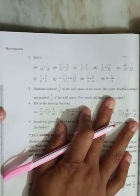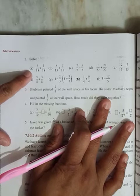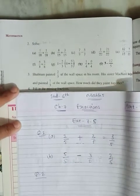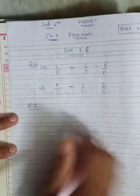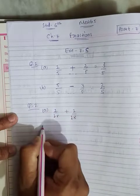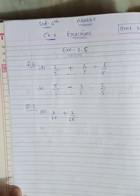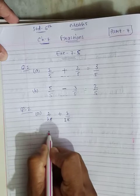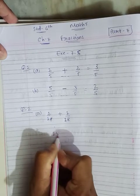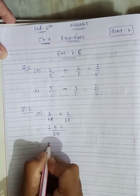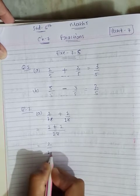Question number 2 — solve. In part A, you are given one upon eighteen plus one upon eighteen. When the denominator is the same, as I have already told you, if there is a plus between the numerators then you add them, and if there is a minus then you subtract. Here the denominator is the same, so write it one time. Above, one and one with a plus gives one plus one.